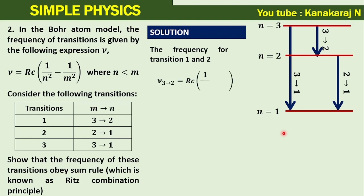ν₃→₂ = Rc(1/2² - 1/3²). Frequency for transition 2 to 1 equals Rc(1/1² - 1/2²).